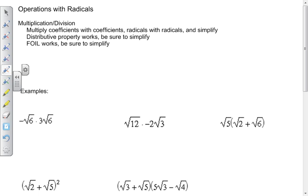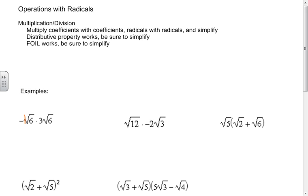In this first multiplication example, there's a negative 1. So I have negative 1 times 3, and the square root of 6 times the square root of 6. Reorganizing, I have negative 3 times 6, which is negative 18, because the square root of 6 times the square root of 6 is the square root of 36, which equals 6.